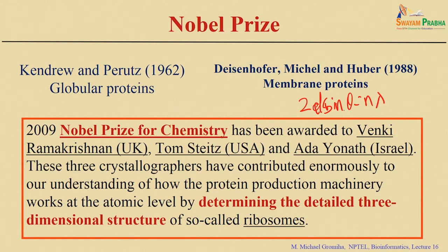In Bragg's law, θ is the angle between the incident ray and the plane, D is the interplanar distance, and λ is the wavelength. They showed that 2D sinθ = nλ, and you get the highest diffraction only if the path difference is integral multiples of lambda.